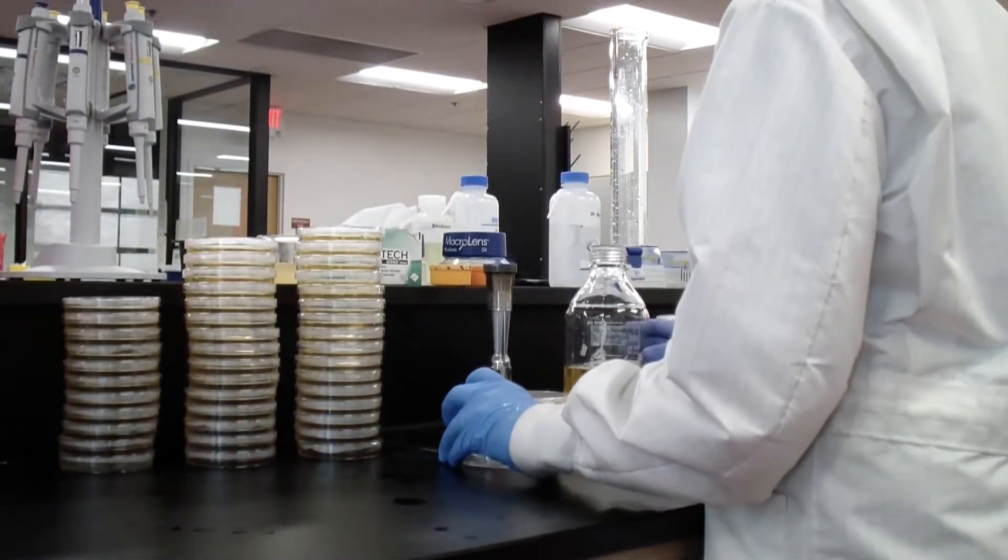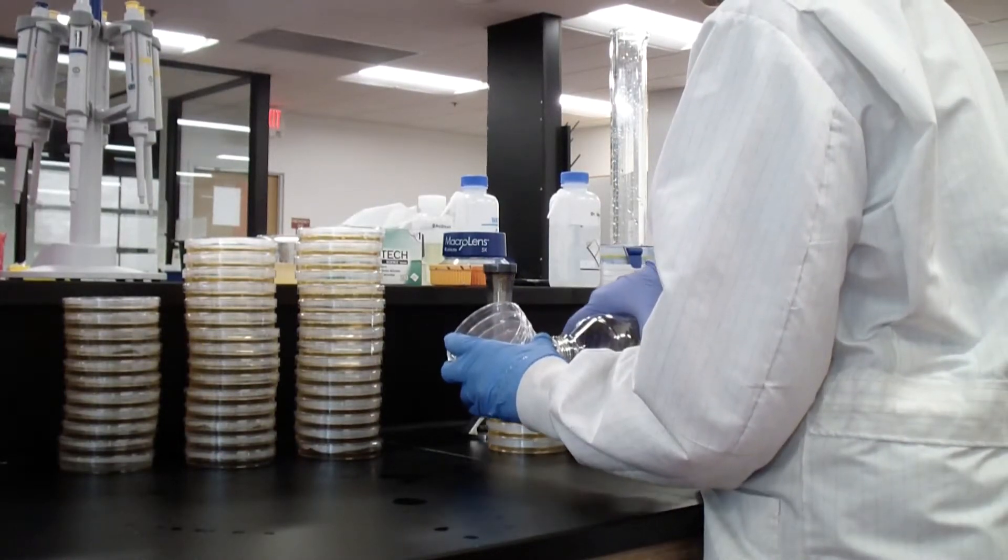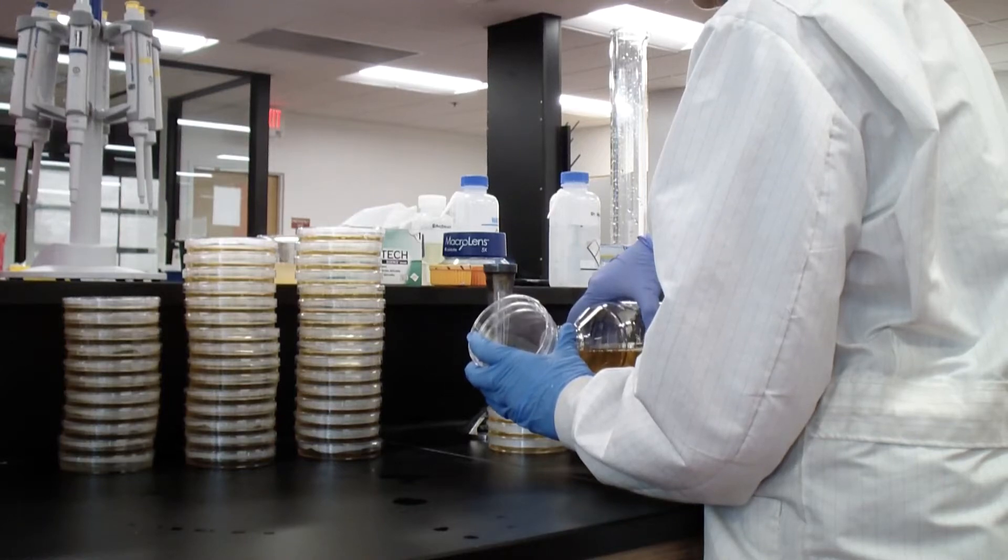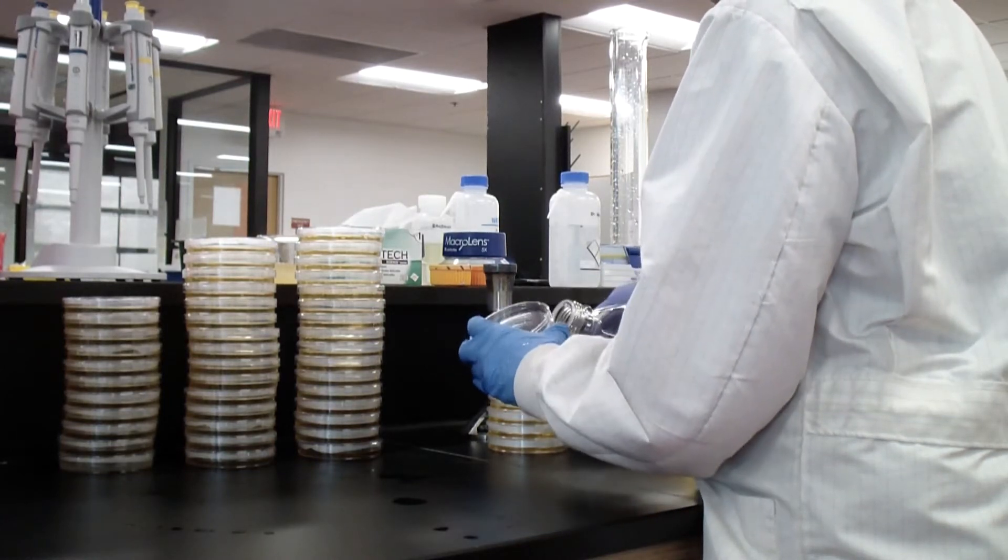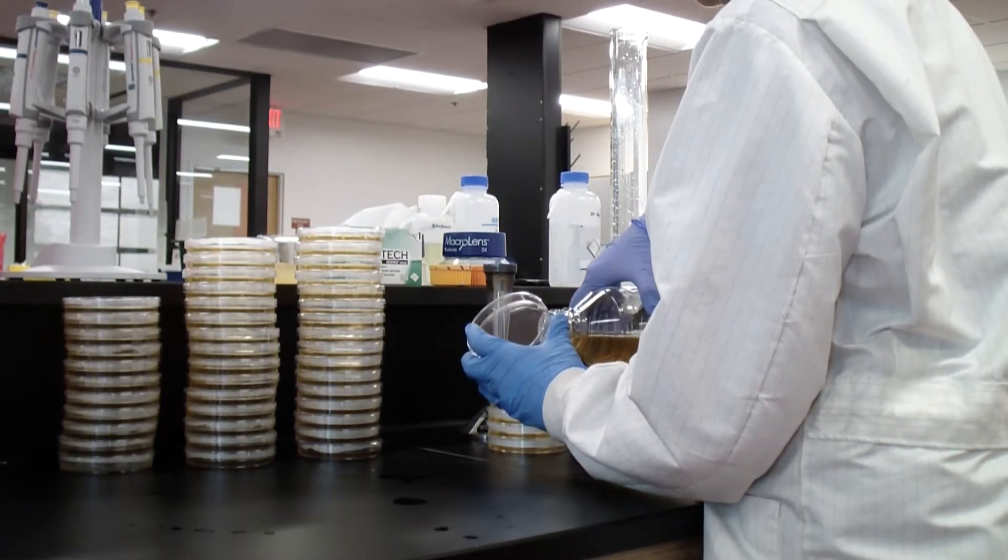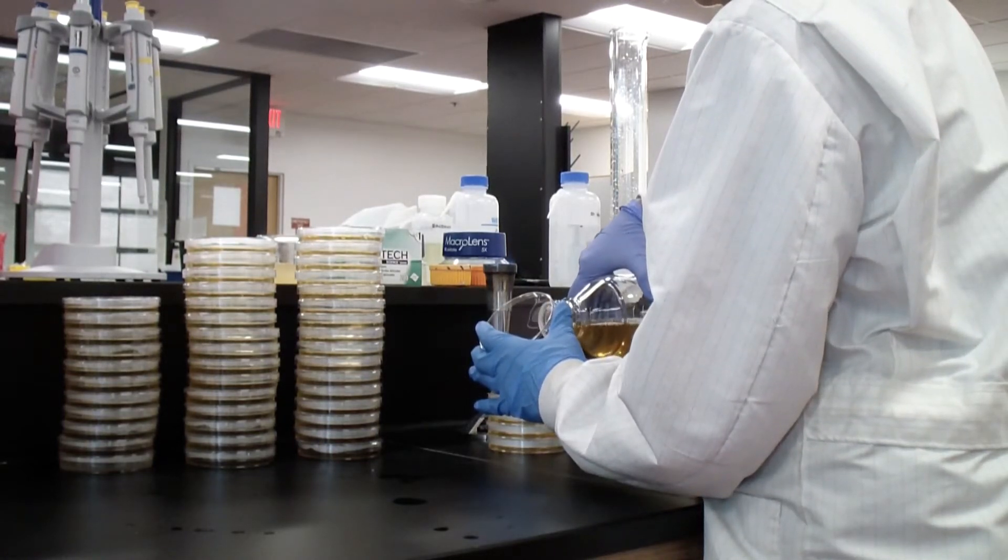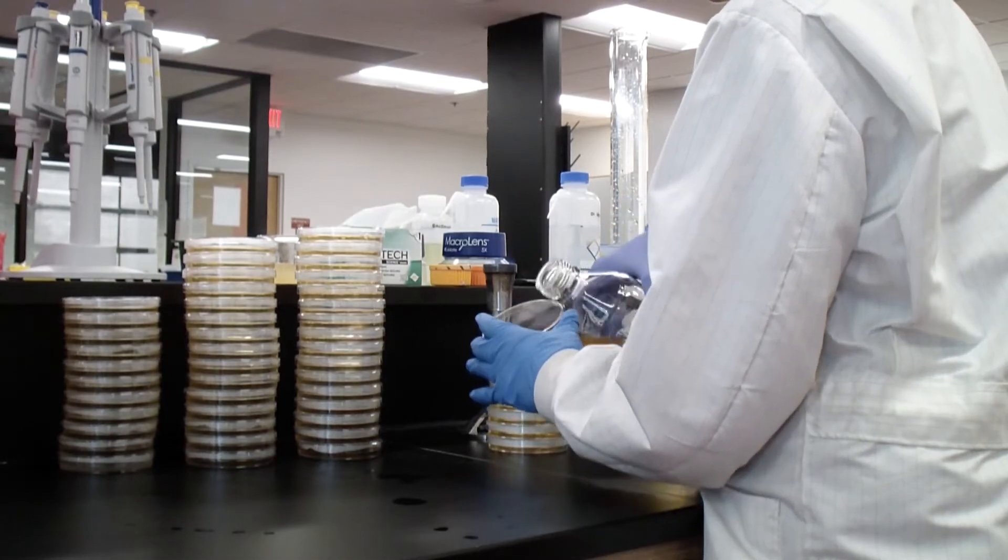Once the media has cooled down enough to handle the bottle while still being liquid, the media is poured into sterile Petri dishes working close to a flame to make sure that the media does not get contaminated. We stack the warm plates on top of each other to limit the amount of condensation that forms in the plate.